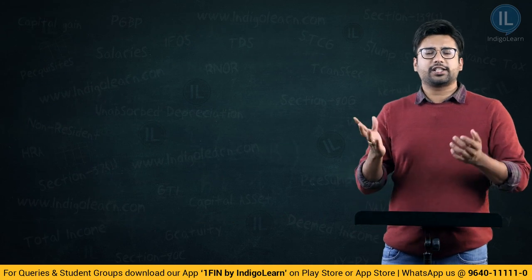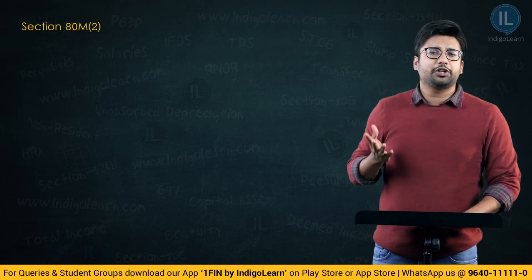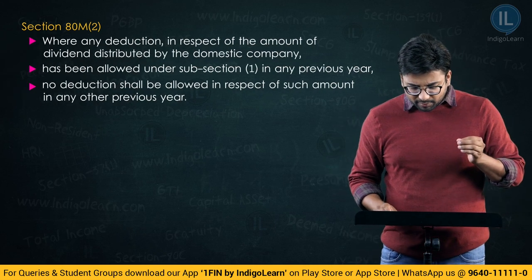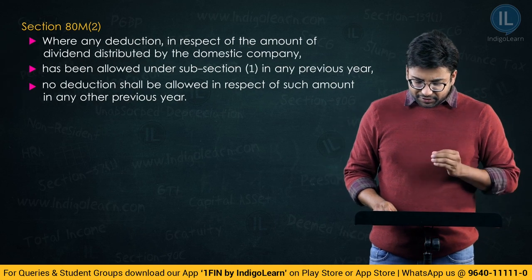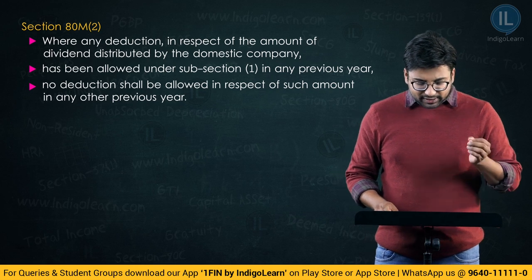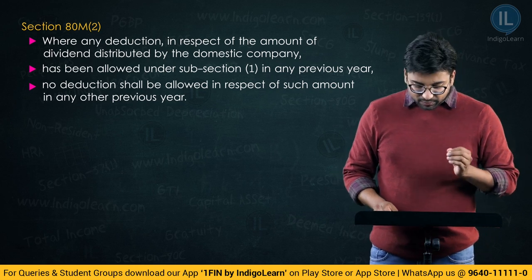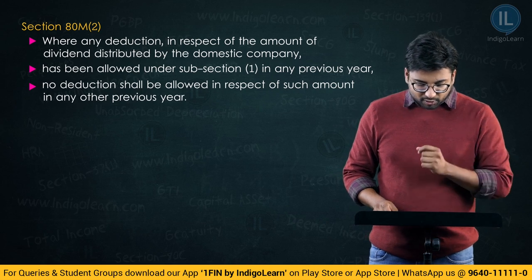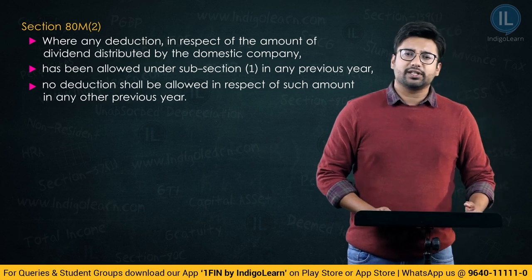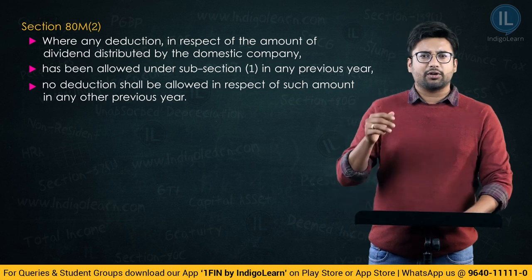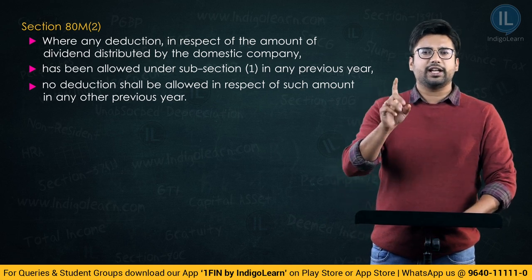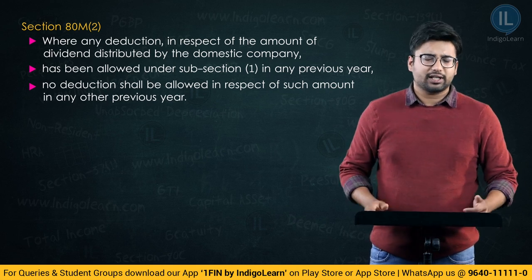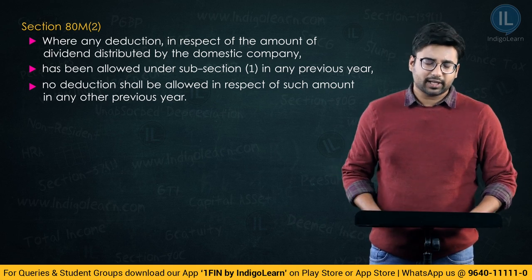Before I go to the next part, there is subsection 2 also. Where any deduction in respect of the amount of dividend distributed by the domestic company has been allowed under subsection 1 in any previous year, no deduction shall be allowed in respect of such amount in any other previous year. So the amount of income distributed, you can take it as a deduction only once — you cannot take the same deduction multiple times.